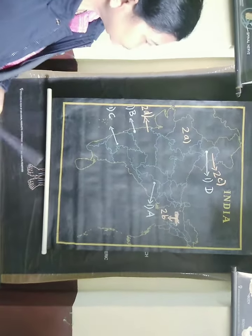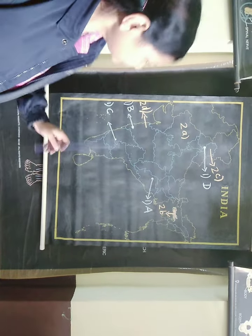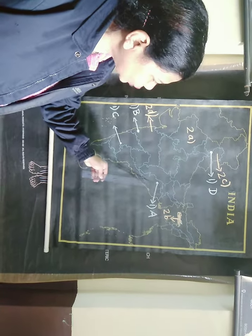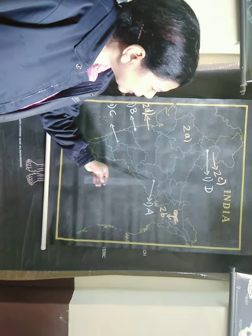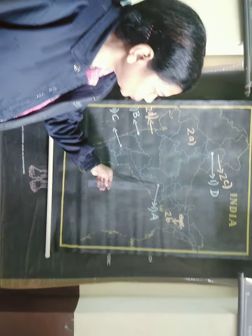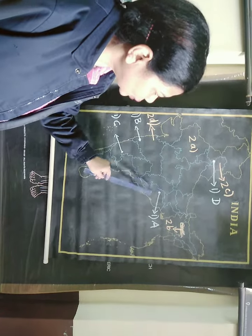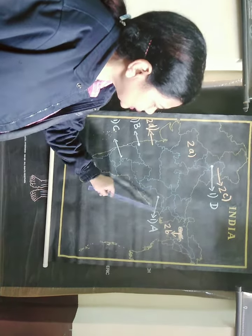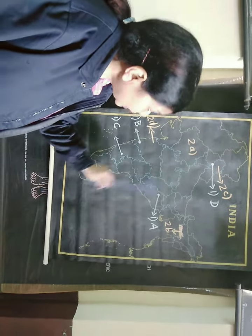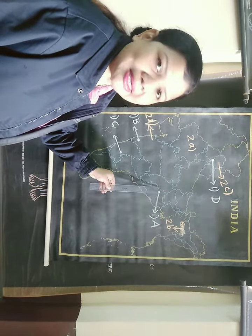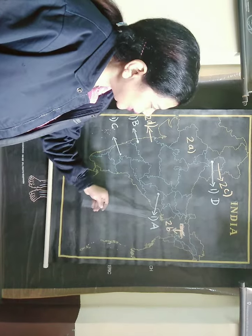We will start with question 1A. In 1A, you have studied the place where Hirakud Dam is situated. Hirakud Dam is situated in the state of Orissa, on the northern side. If we divide Orissa into 4 directions — North, South, East and West — then it is located on the North Western side of Orissa. You can see I have written 1A on the map.